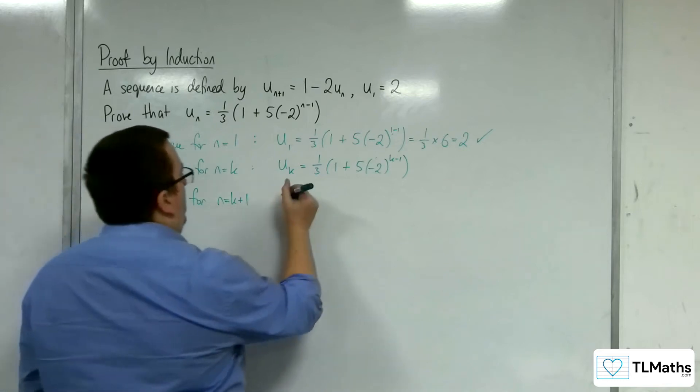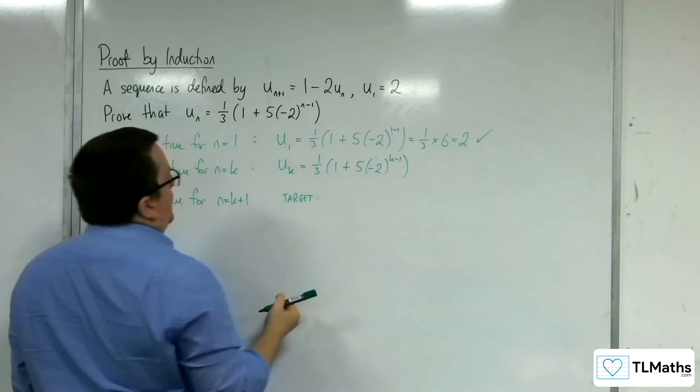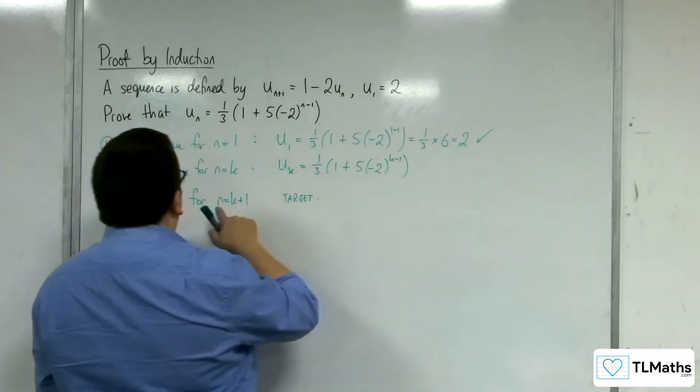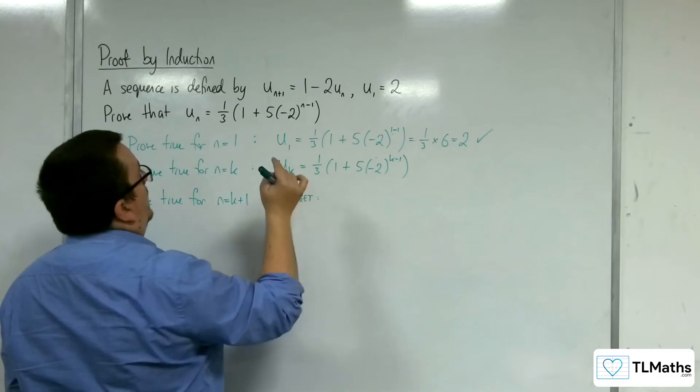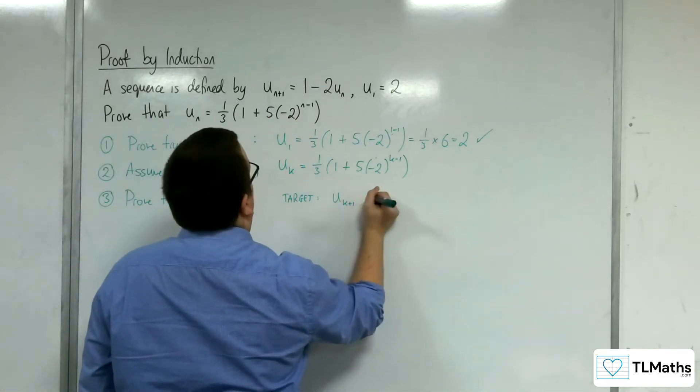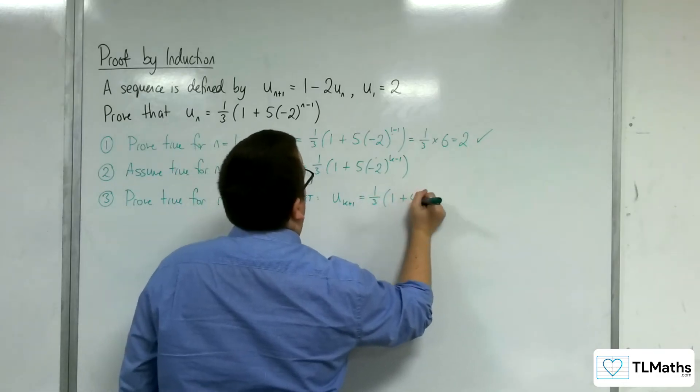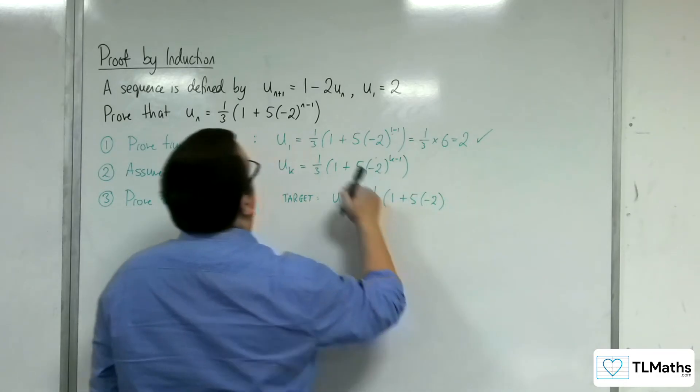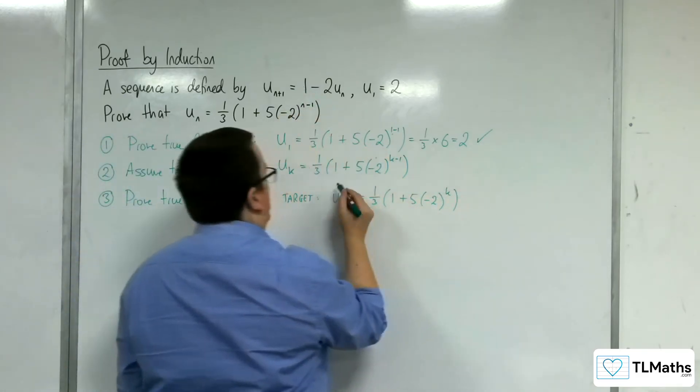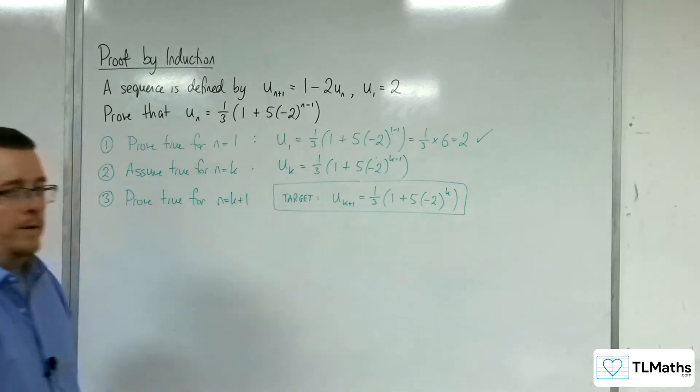So our target is for me to be able to substitute in k plus 1 into this to get u_{k+1} = (1/3)(1 + 5(-2)^{k+1-1}), so to the k. So this is what I'm looking to achieve.